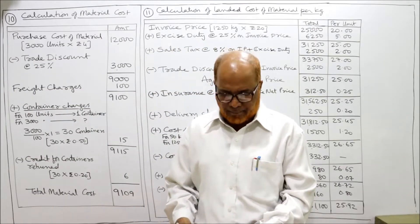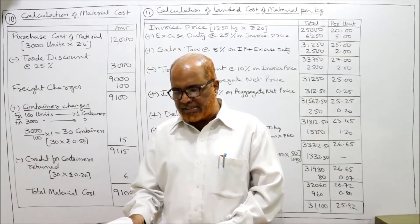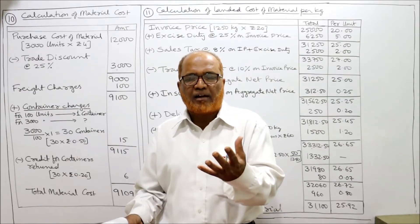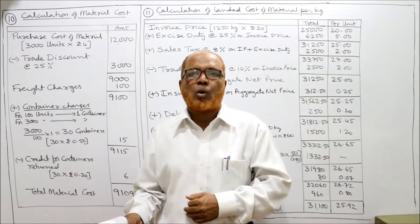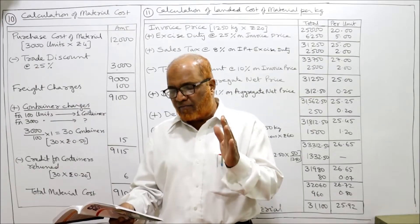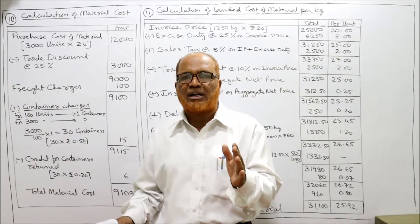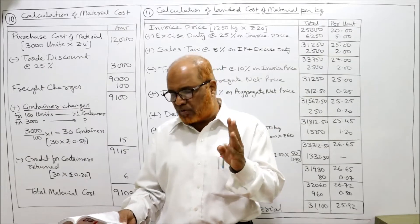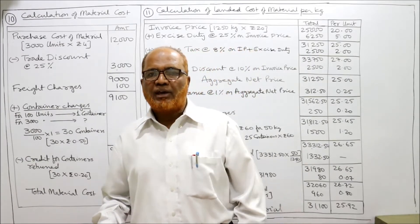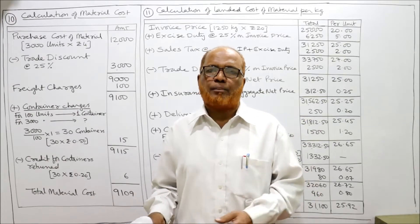I am starting Problem Number 10. See the problem carefully. The following quotation is received from a supplier in respect of material. We want some material, we issued a tender, and in response we received a quotation from the supplier. The lot prices are: 1000 units at five rupees each, 2000 units at four rupees 75 paisa each, and 3000 units at four rupees each. The supplier gives a quantity discount if we place an order in bulk.